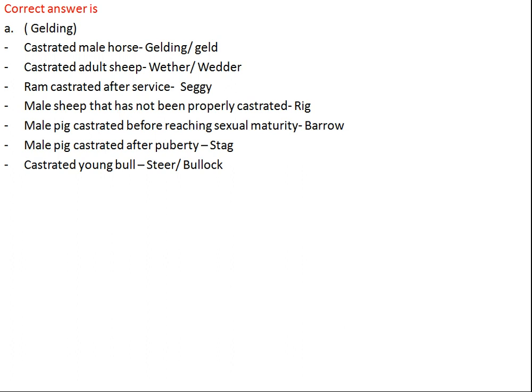A male sheep that has not been castrated properly is known as a ridgeling. A male pig castrated before reaching puberty is called a barrow, and a male pig castrated after reaching puberty is called a stag. A castrated bull is known as a steer or bullock.